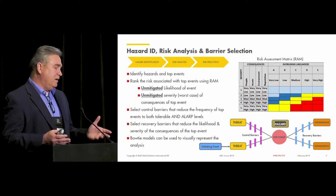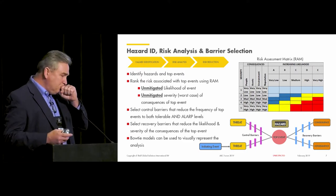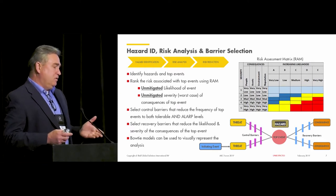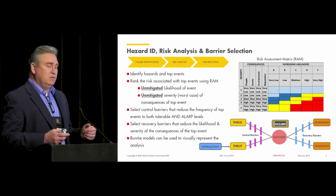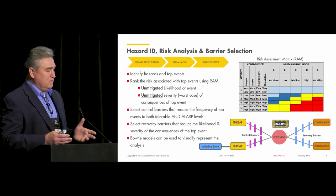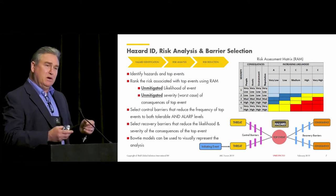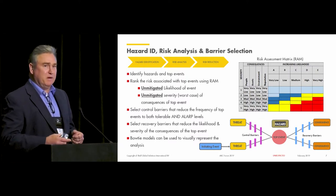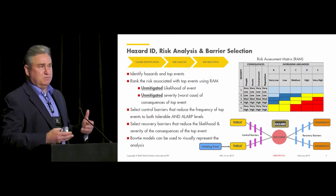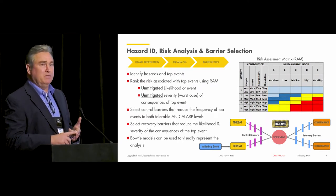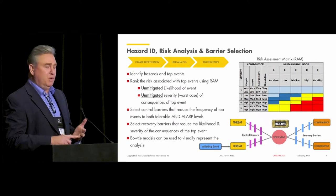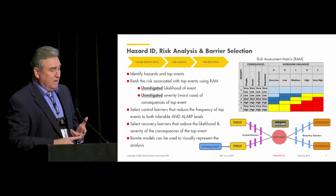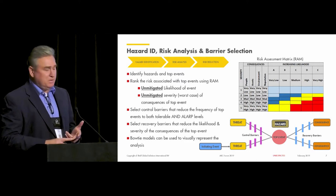This analysis can be shown visually in a bow tie model. One of the key features of the bow tie model is initiating events — what causes a threat to be realized and could lead to the top event if your control barrier is not effective. Initiating events fall into a few main categories: external events such as earthquakes, fires, floods, and sabotage — which is where cybersecurity fits in — equipment failure, and human failure.